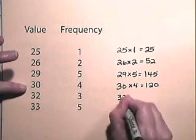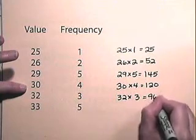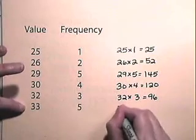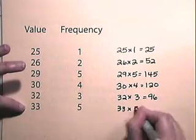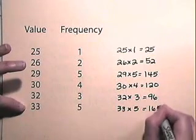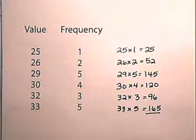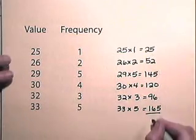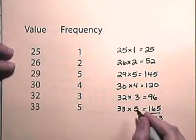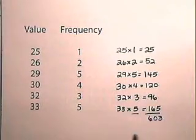we multiply 32 times 3 to get 96, and we multiply 33 times 5 to get 165. Now we add this column and get 603, and we add here the frequencies and we get 20.